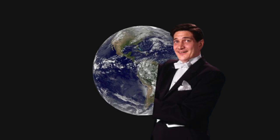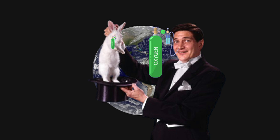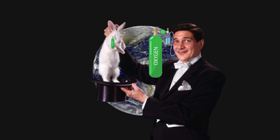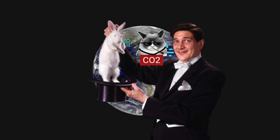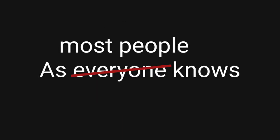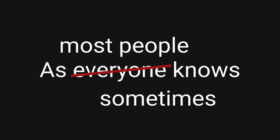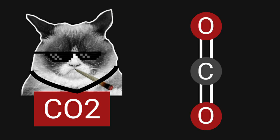Let me explain. As everyone knows, the happy little lifeforms on planet earth that run around pulling rabbits out of hats have to breathe in oxygen to keep the rabbit pulling going for any extended length of time. As everyone also knows, when those little lifeforms breathe out, it is not the same oxygen that went into their lungs that jumps out, but CO2 instead. And as most people know, but don't often remember, CO2 stands for one carbon atom and two oxygen atoms.